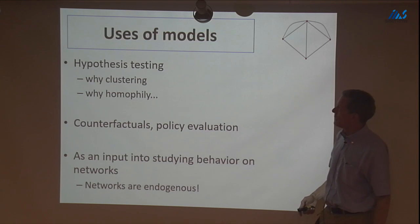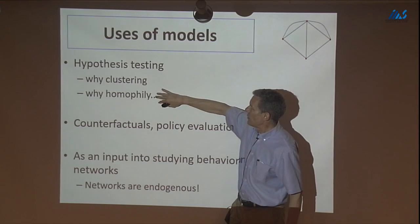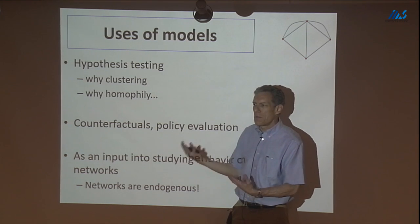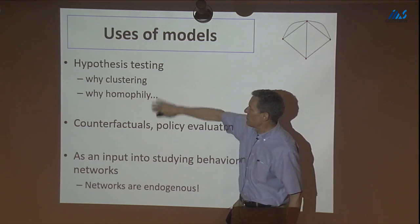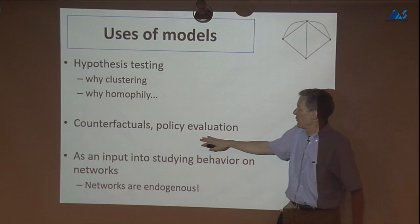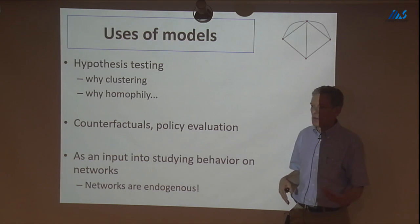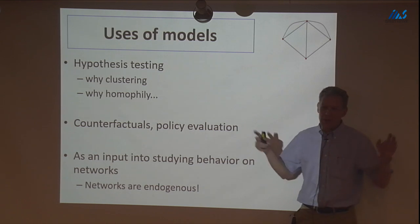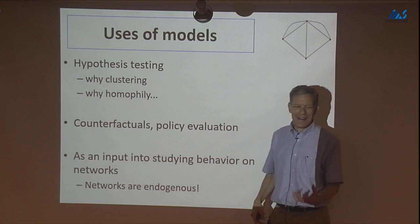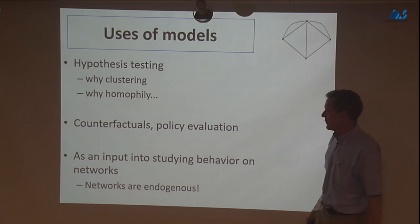When do the right networks form? We can ask how network formation is affected by bargaining or other features, and how it depends on context. Uses of these models include basic hypothesis testing — why are we seeing homophily? — writing down different models and seeing whether they can mimic the data. They're also useful for counterfactuals and policy evaluation: if we want to say what happens to trade policy after Brexit, we need a generative model of how trade relationship networks form.